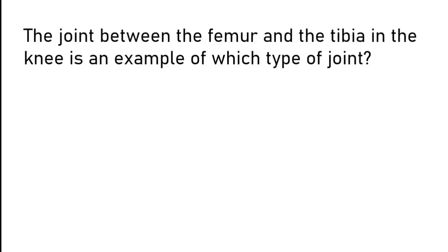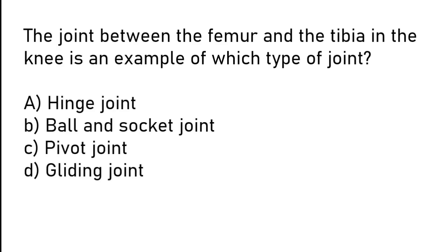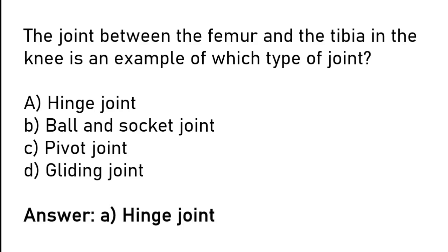The joint between the femur and the tibia in the knee is an example of which type of joint? Hinge joint, ball and socket joint, pivot joint, or gliding joint. The correct answer is option A: the joint between the femur and the tibia in the knee is an example of a hinge joint.